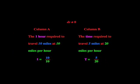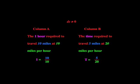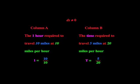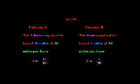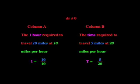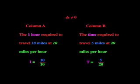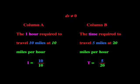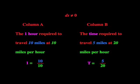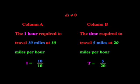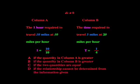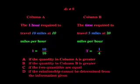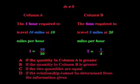Since the two columns want us to compare the time, we can use a little algebra trick to make everything in terms of time. That means column A tells us it takes 1 hour to go 10 miles at 10 miles per hour, and column B tells us it takes T time to go 5 miles at 20 miles per hour. We can reduce the fraction in column B to T equals 1 over 4. So which answer would you pick?